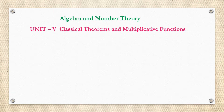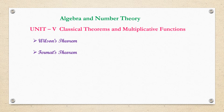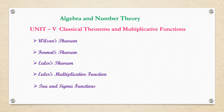Welcome back. Today we are going to start Unit 5. The title of Unit 5 is 'Classical Theorems and Multiplicative Functions.' The contents of this unit are: Wilson's theorem, Fermat's theorem (also called Fermat's little theorem), Euler's theorem, Euler's multiplicative function, and tau and sigma functions.